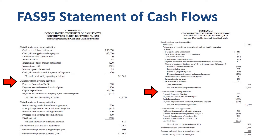In cash from investing activities, the main line items are capital expenditures, proceeds from selling factories or buildings, and business acquisitions or divestments. In cash from financing activities, the main line items are dividends paid, shares issued or repurchased, and issuances or repayments of debt.